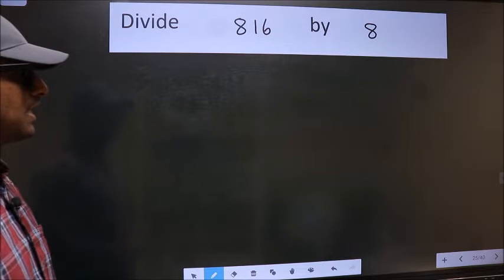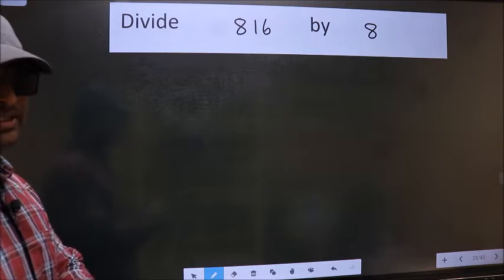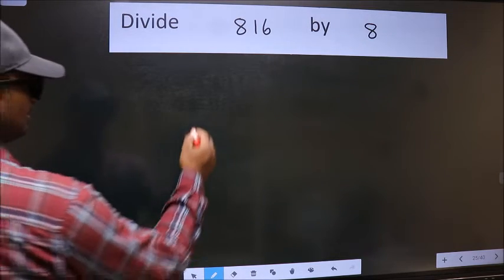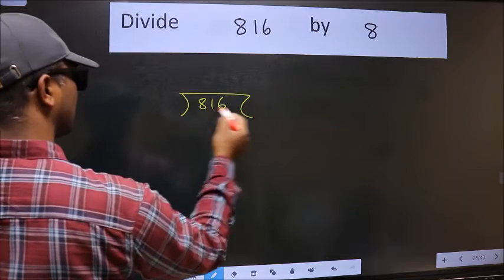Divide 816 by 8. To do this division, we should frame it in this way. 816 here and 8 here.